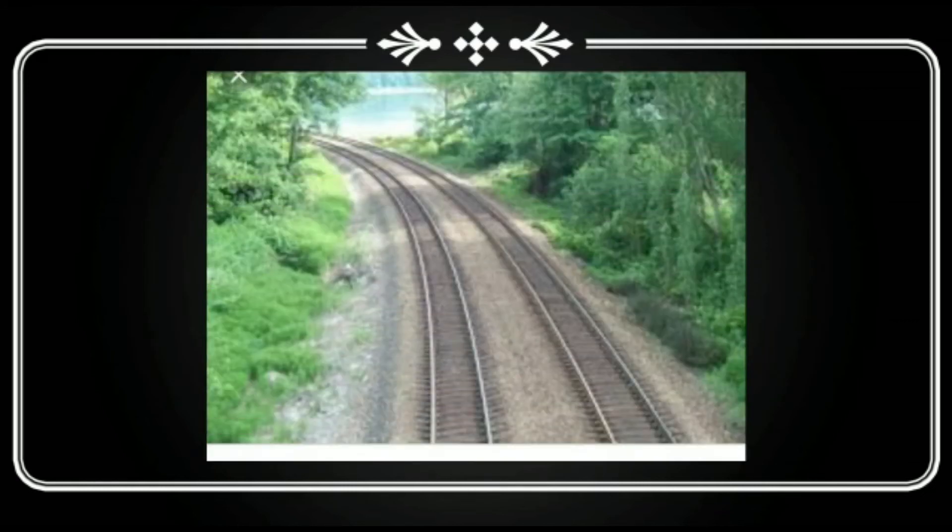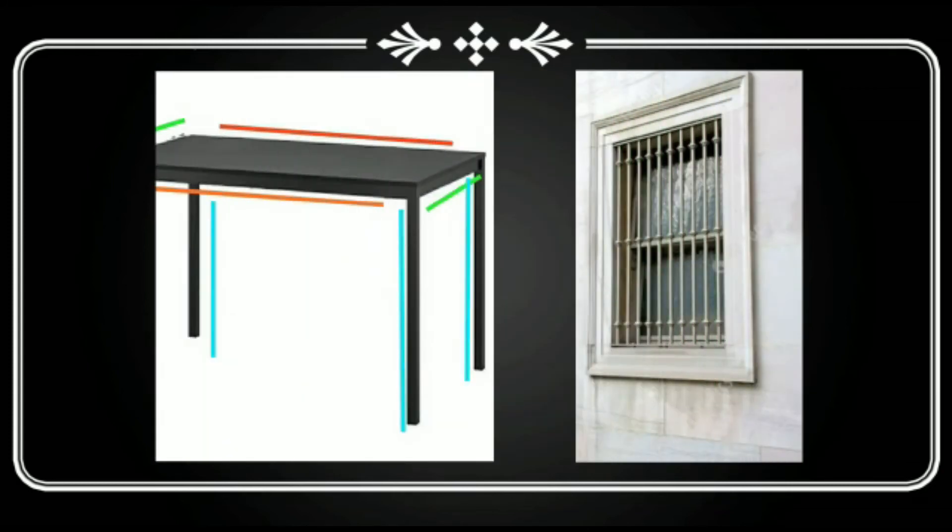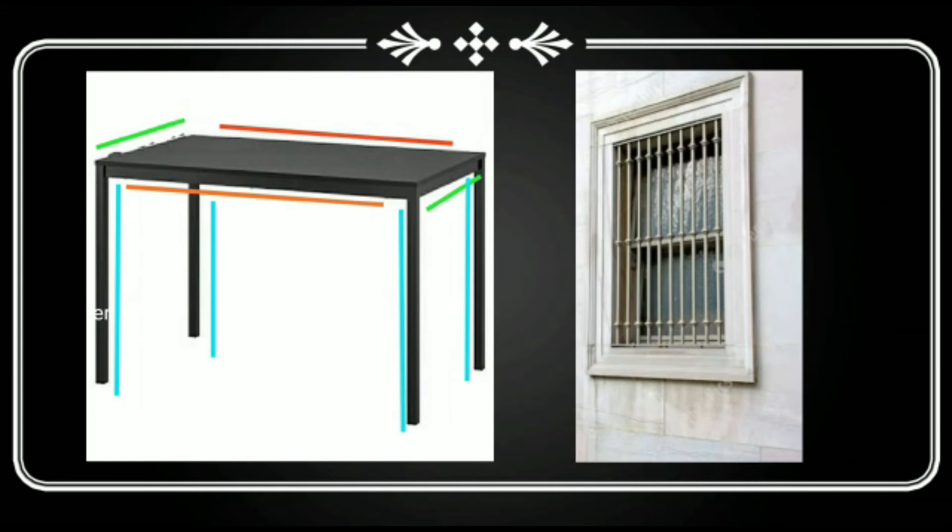Similarly, the rail track, the horizontal bars in your window, the opposite edges of a table, all are examples of parallel lines.